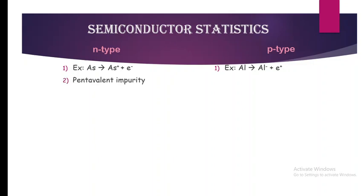N-type semiconductors are obtained when we dope with pentavalent impurities, whereas p-type semiconductors are obtained when doping is done using trivalent impurities. In n-type semiconductors the impurity gives an electron, meaning it is acting as a donor.